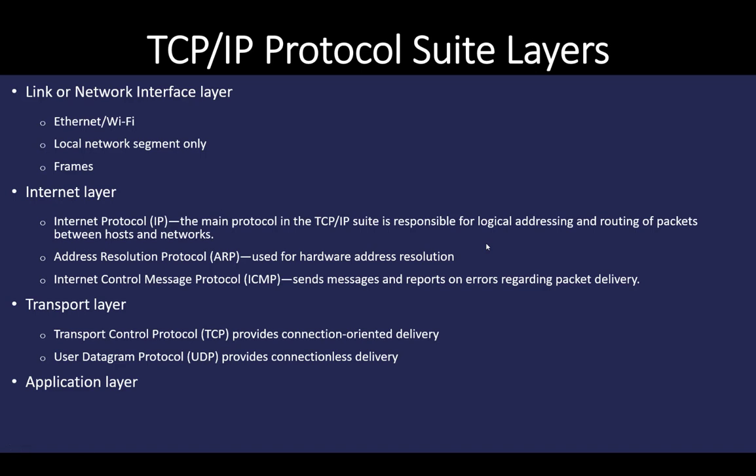The transport layer protocols provide communication sessions between computers. Each application protocol is identified at the transport layer by a port number. There are two transport protocols: TCP, Transport Control Protocol, and UDP, User Datagram Protocol. TCP is connection-oriented — when a packet is received, the receiver notifies the sender it was successfully received. UDP provides connectionless delivery, so the sending computer never receives confirmation. The application layer at the top contains protocols for communication formats and exchanging data between hosts, such as transmitting an email or requesting a web page.